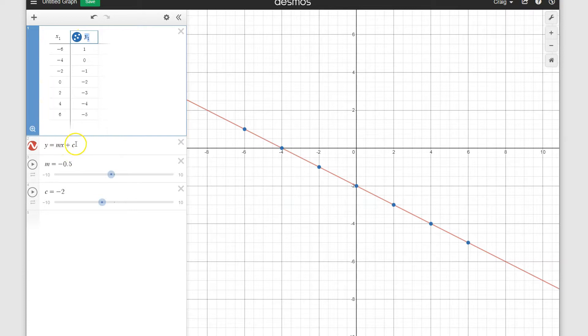Now looking at the values of m and c down here, we're able to deduce the equation or the relationship y equals mx plus c. So in this case, m is equal to -0.5 and c is equal to -2.